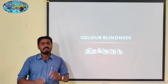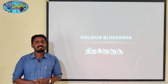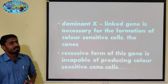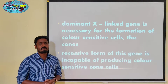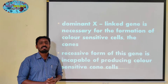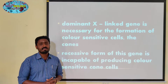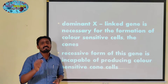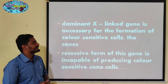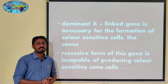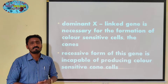We are going to talk about hemophilia disease. Allosomes and X-chromosomes are responsible. We are going to identify different types of cells. A dominant X-linked gene is responsible for the formation of color-sensitive cells — that is, cone cells. Cone cells are in our retina region. The genes are dominant.